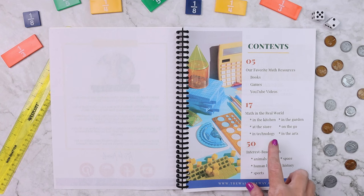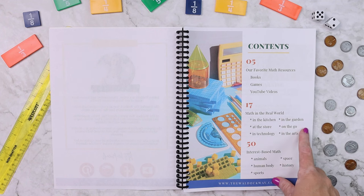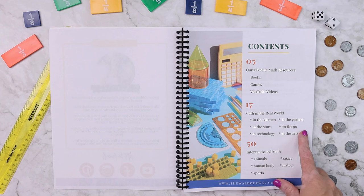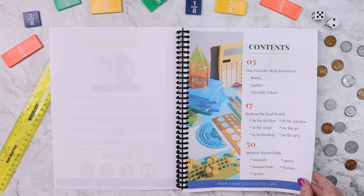I'm going to show you some of what's included, but basically it's going to be math in the kitchen, math at the store, math and technology, math in the garden, math on the go, math and the arts. And then for interest-based math, we're going to be talking about math as it relates to animals, human body, sports, space, and history.